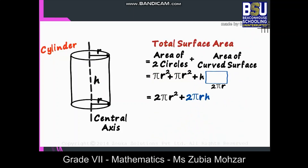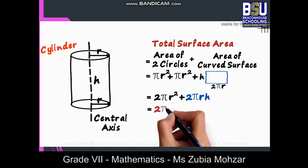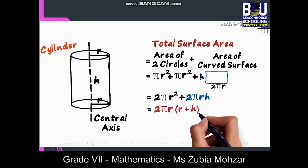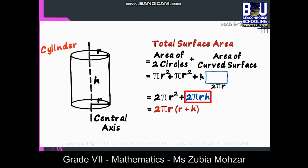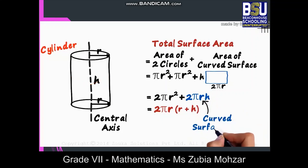That's it. This is the total surface area of a cylinder with radius r and height h. As 2πr is common to both terms, we can write it as 2πr(r + h). That's the total surface area. The curved surface area of the cylinder is 2πrh.